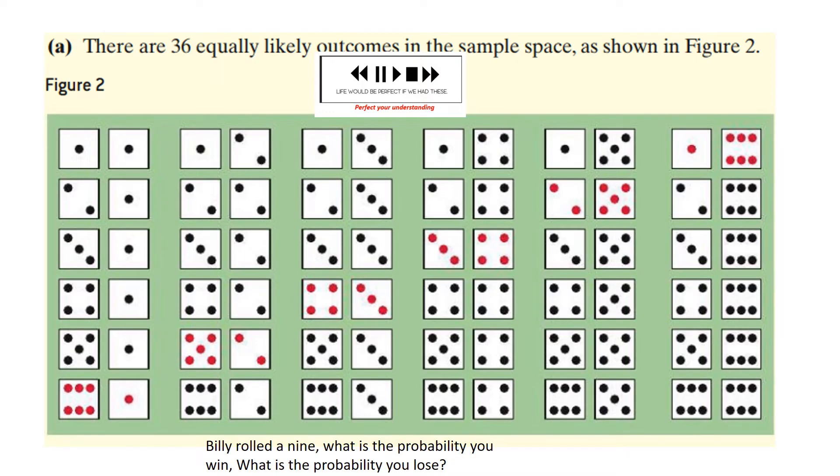Here is a common sample space. You see if you roll a pair of dice, you have one die that is red and the other die is black. And so you have 36 possible outcomes because there are six ways the black can come up and there are six ways the red can come up. And so here's a problem. Billy rolled a nine and you win if you roll a higher score than him. What's the probability you win and what's the probability you lose? You know what to do and when to do it.